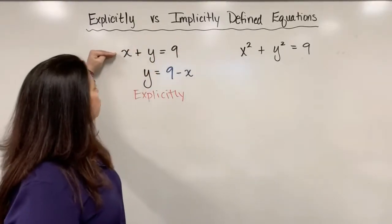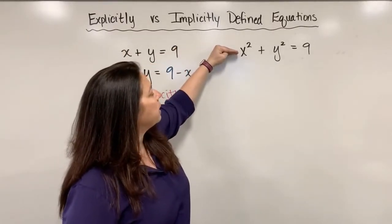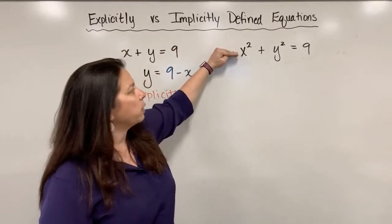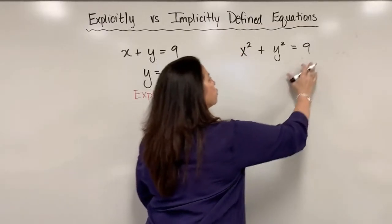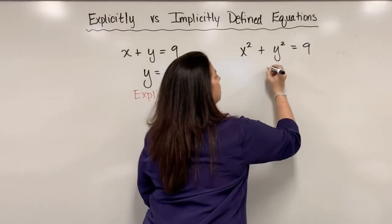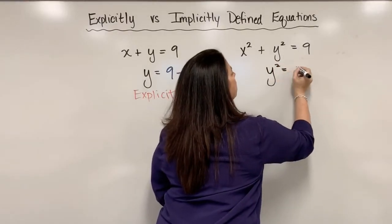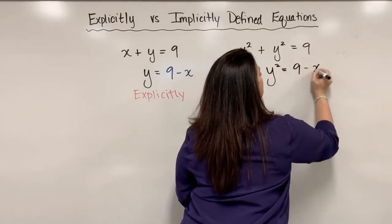But if I try to solve this equation, x squared plus y squared equals nine, for y, watch what happens. I subtract x squared from both sides and end up with y squared equals nine minus x squared.